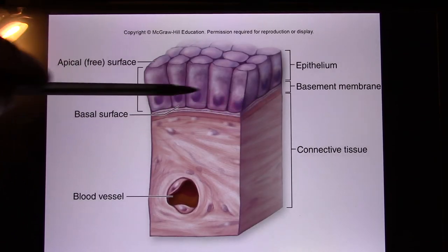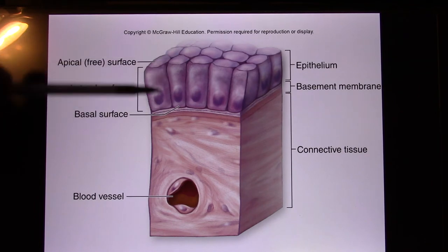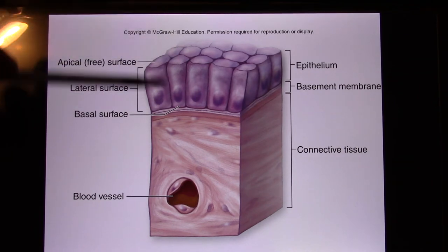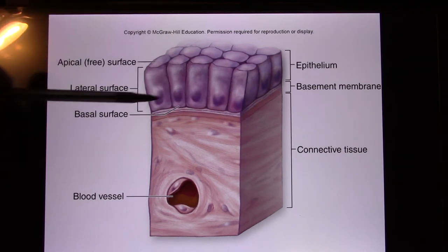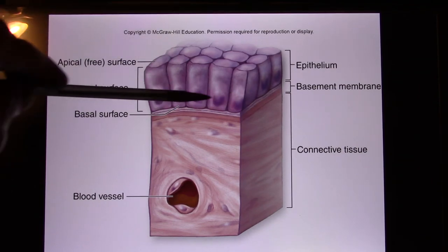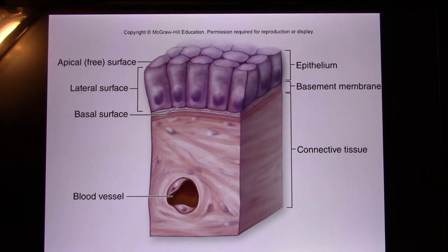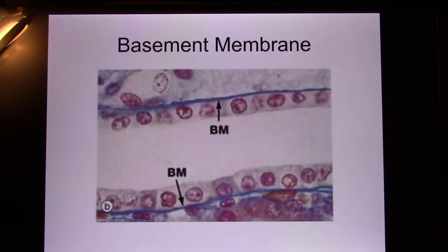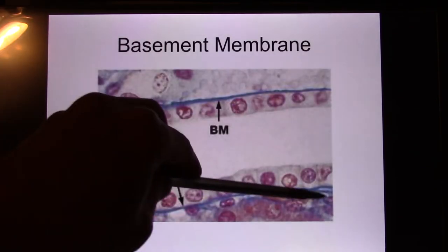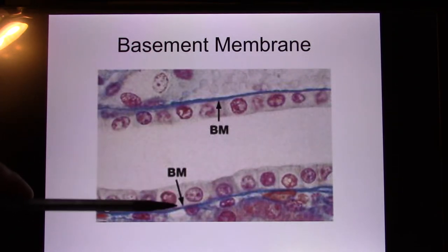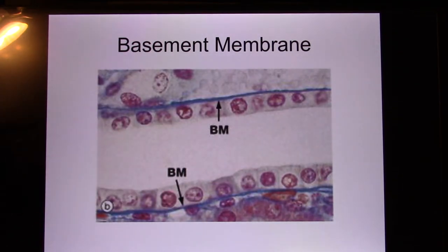Epithelial tissue has a basement membrane, an apical side facing the outside, and a basolateral side facing the inside. Here is another example showing the basement membrane, the apical side, and the basolateral side.